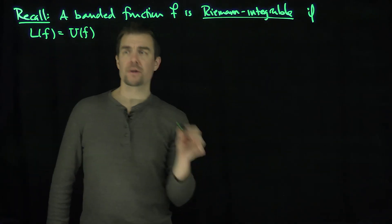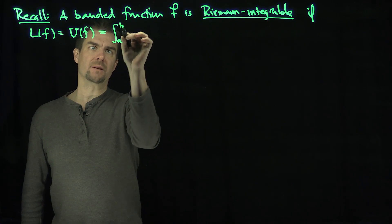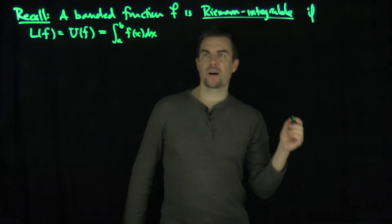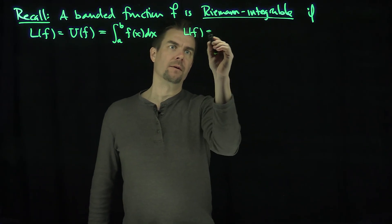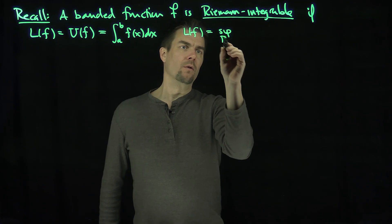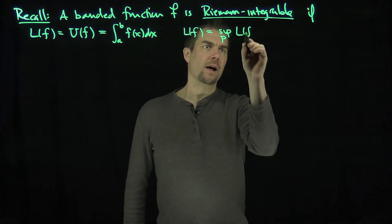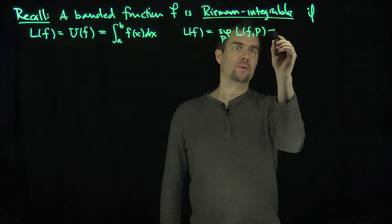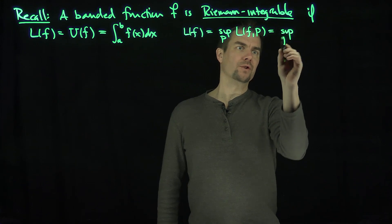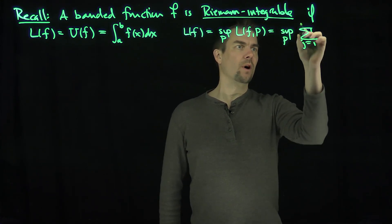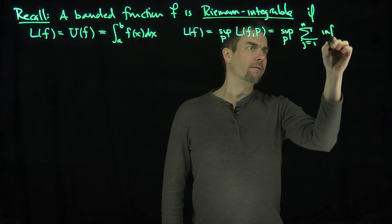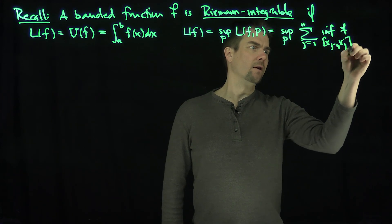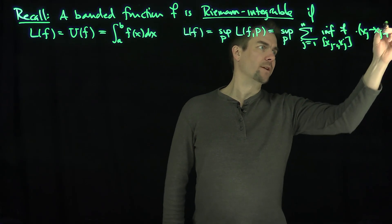And when these two quantities are equal, we write the integral from a to b of f of x dx. Lf is the supremum over all partitions of Lfp. And what are these Lfp's? This is the supremum over all partitions p of the sum j goes from 1 to n of the infimum of the function over the interval x_{j-1} to x_j times x_j minus x_{j-1}.